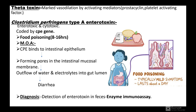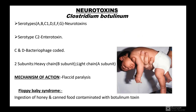Theta toxin causes marked vasodilation by activating mediators like prostacyclin and platelet-activating factor. Clostridium perfringens Type A enterotoxin is enterotoxic and cytotoxic, coded by the CPE gene. It causes food poisoning within 8 to 16 hours after consumption. The mechanism: C. perfringens enterotoxin binds to intestinal epithelium, forming pores in the intestinal mucosal membrane, leading to outflow of water and electrolytes into the gut lumen causing diarrhea. Diagnosis is by detection of enterotoxin in feces by enzyme immunoassay.